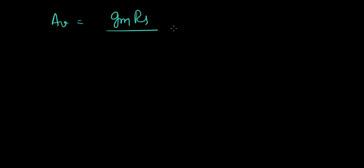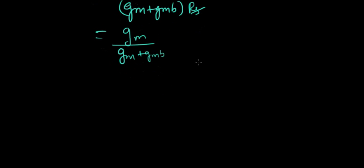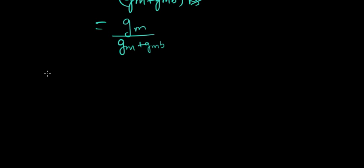So remember what we derived before for the gain of the common drain amplifier? We did Gm times Rs over 1 plus Gm plus Gmb the whole times Rs. And we said Rs is huge, let's consider Rs to be huge. So we can ignore 1. So Gm Rs over Gm plus Gmb times Rs and Rs cancel. So Gm over Gm plus Gmb. This is what we got from the large signal analysis and also the small signal models. What we're going to do now is slightly different.